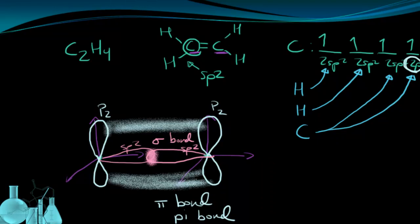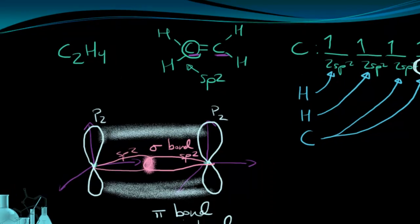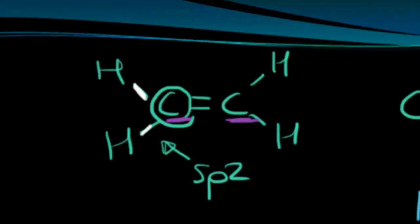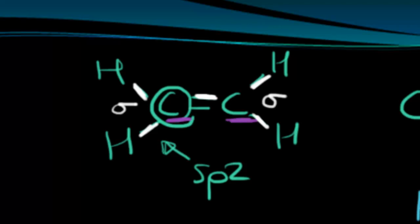So to recap very quickly, if we look back at this molecule, all the single bonds have to be sigma bonds. And one of the bonds, the first bond between the two carbons, is also a sigma bond. But the second bond that occurs, and if there was a third bond, the third bond, have to be pi bonds.